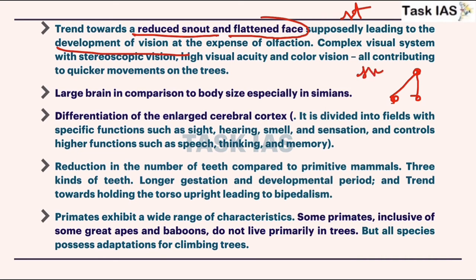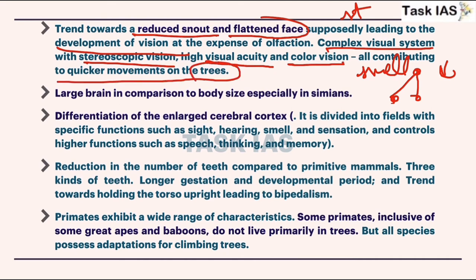Reduced snout and flattened face help in stereoscopic vision — where the eyes can focus on a single object. This increases productivity and efficiency in recognizing any subject. It also shows that our brain focuses more on the vision part, and the olfactory area related to smell is reduced. Complex visual system with stereoscopic vision, high visual acuity, and color vision help in quicker movement on trees as well as on land. Larger brain in comparison to body size, especially in simians.